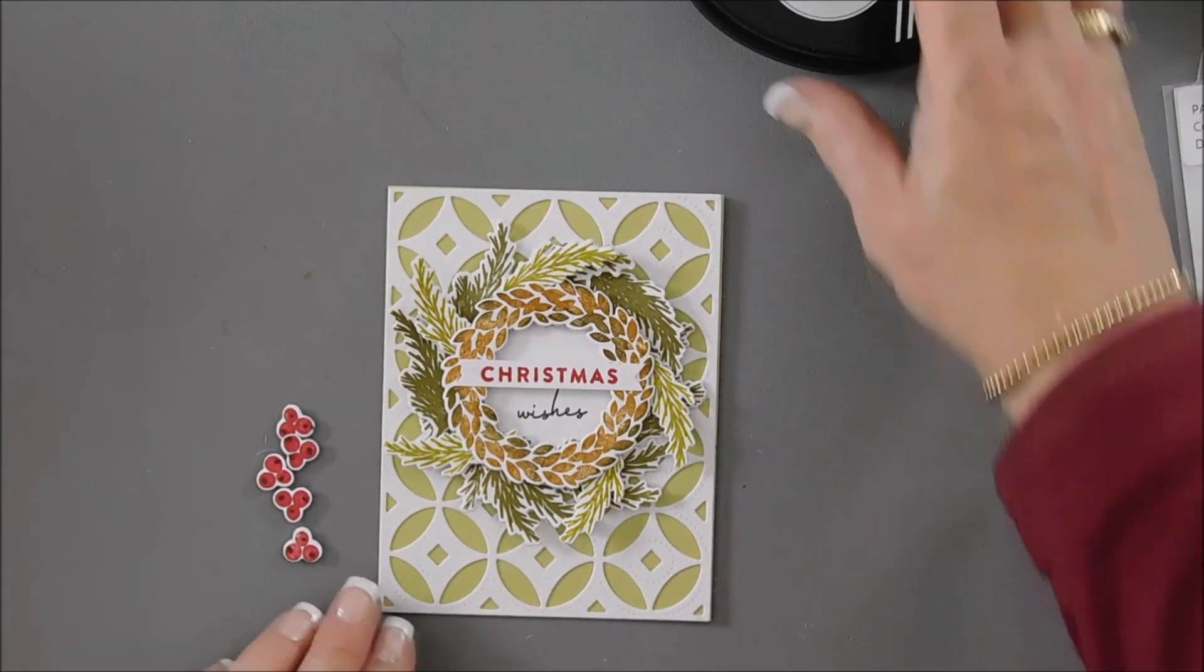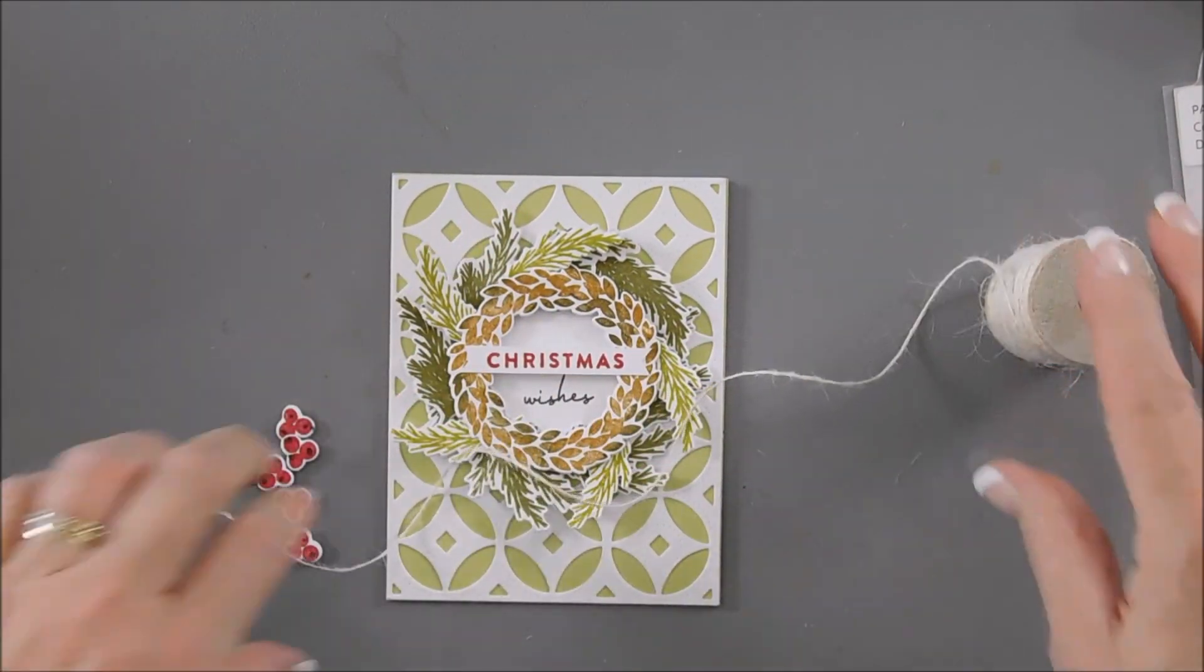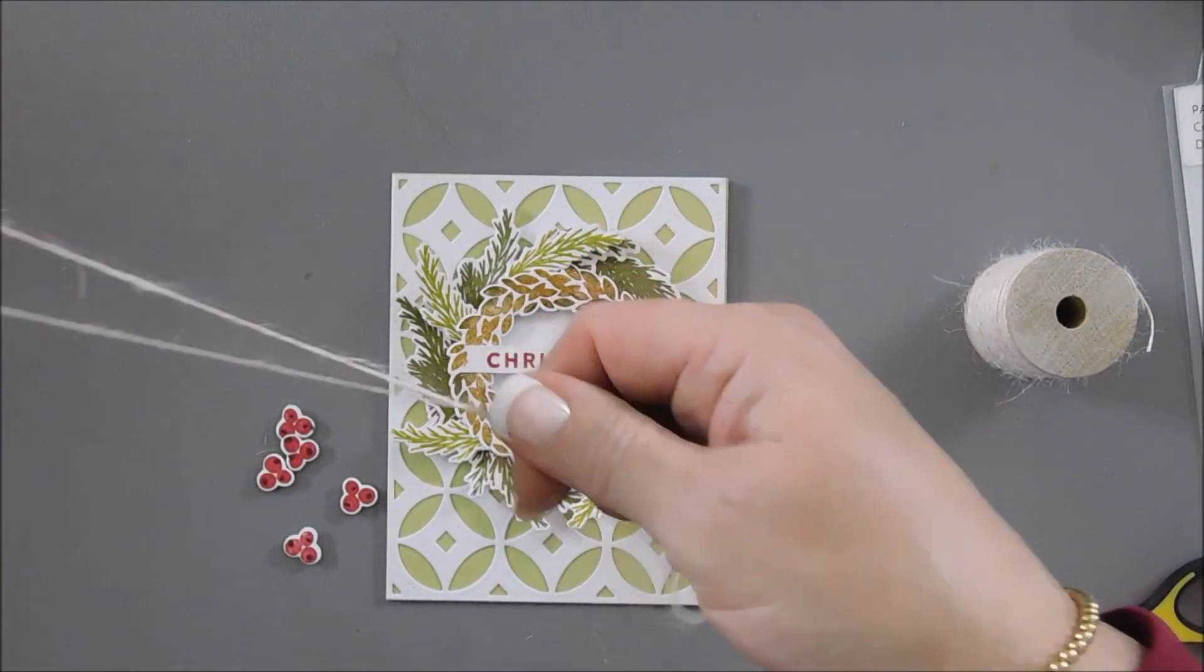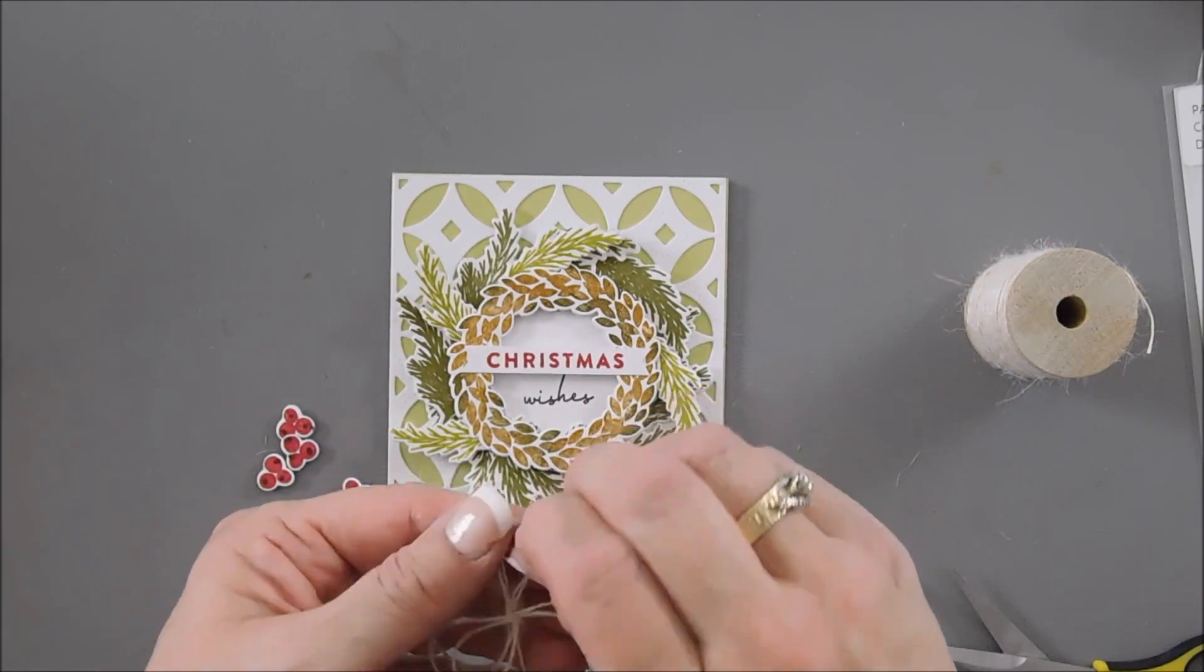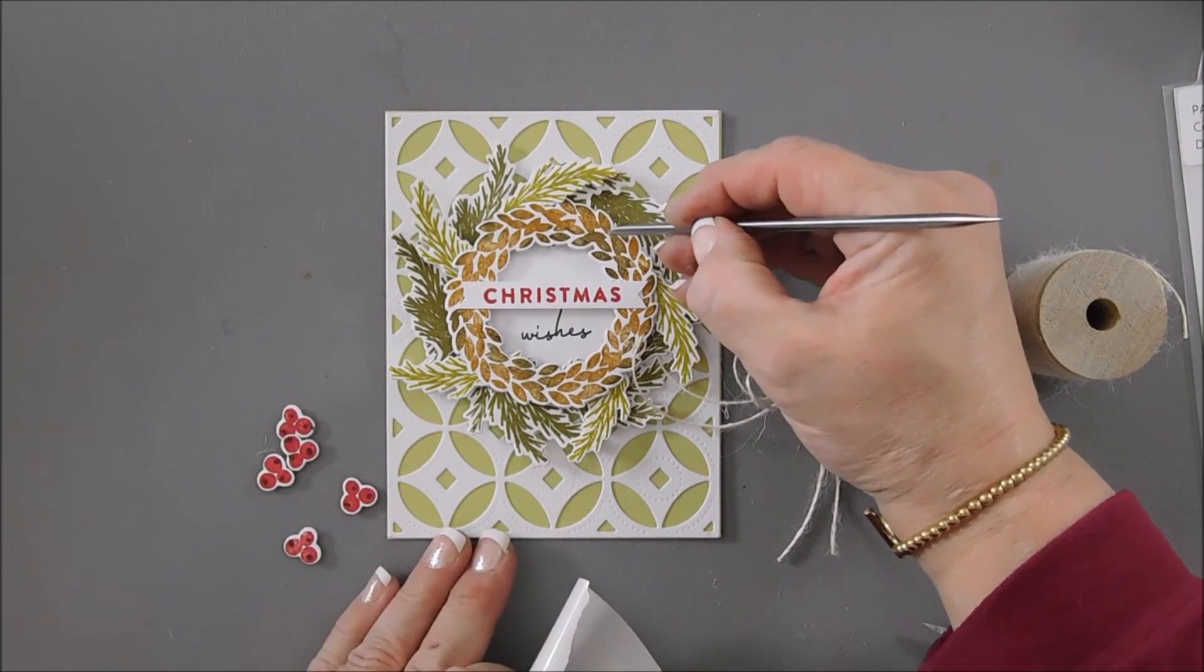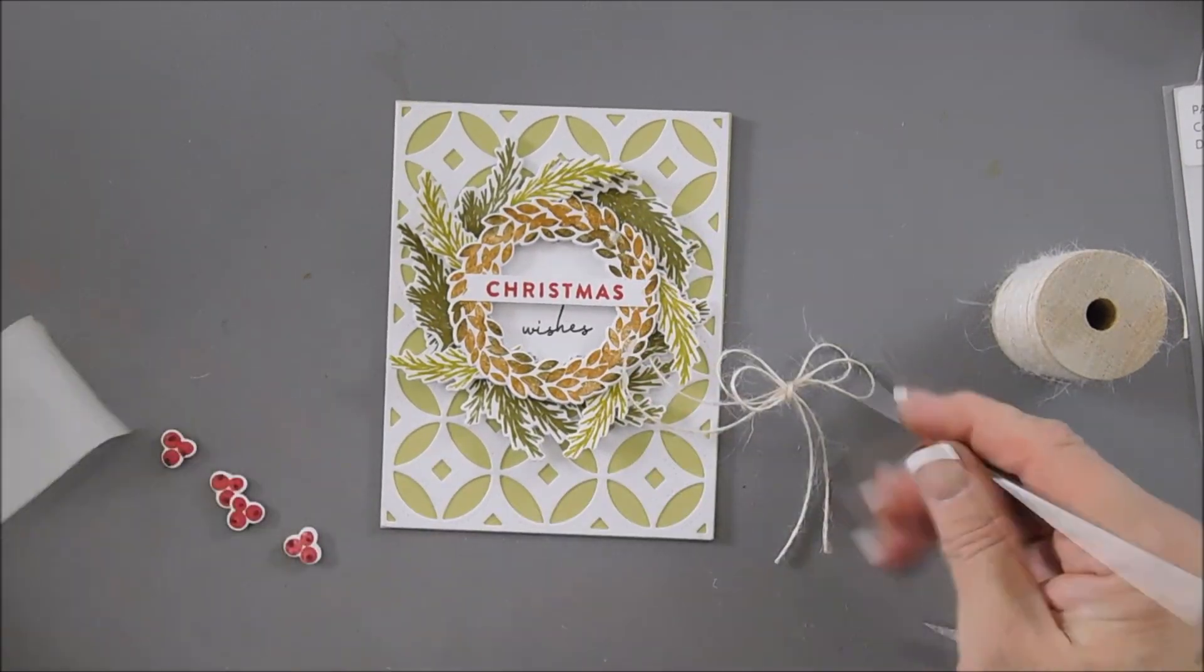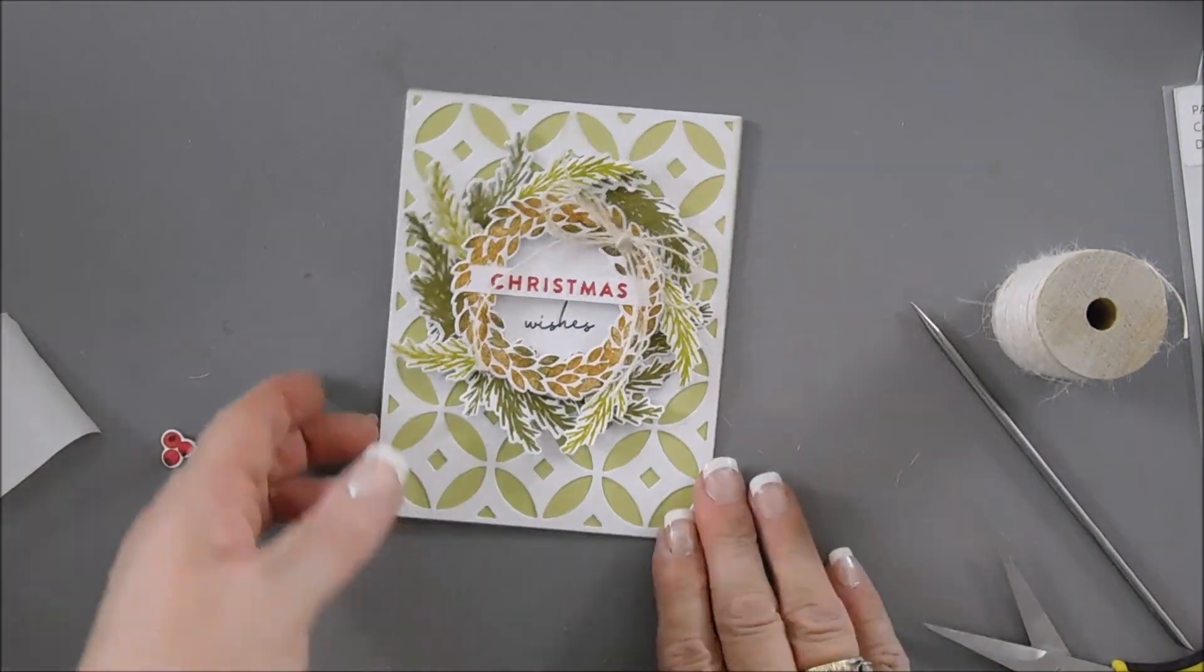Now, before we add our berries, I want to make a bow. We're going to bring in some natural twine. And I am going to double it up. So we will double this up and then just tie a bow with this. I trimmed the tails of our natural twine. And then using a glue dot, we can secure our bow. We're going to add it to our green leaf. And then we can secure our bow kind of at an angle. Don't you love how that looks?